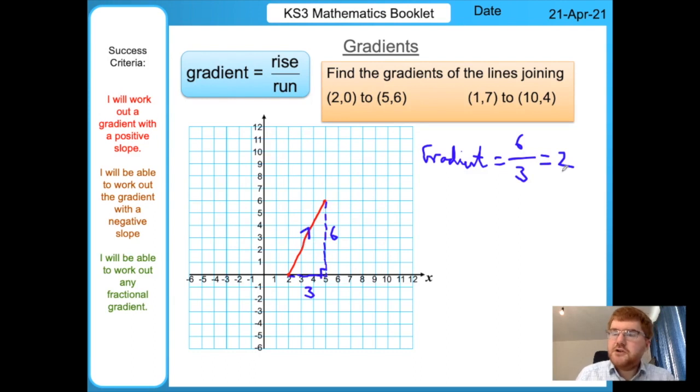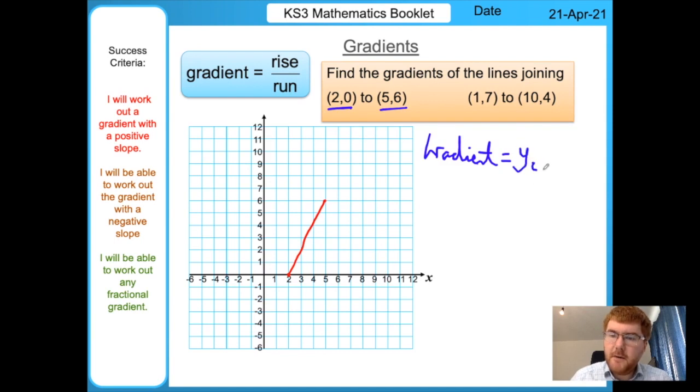We divide by the run, so the width here is 3, and then we get our answer of 2. Because we have an upward sloping line, we should have a positive gradient, which is what we get here. I'm going to show you now the second method of doing the same question.